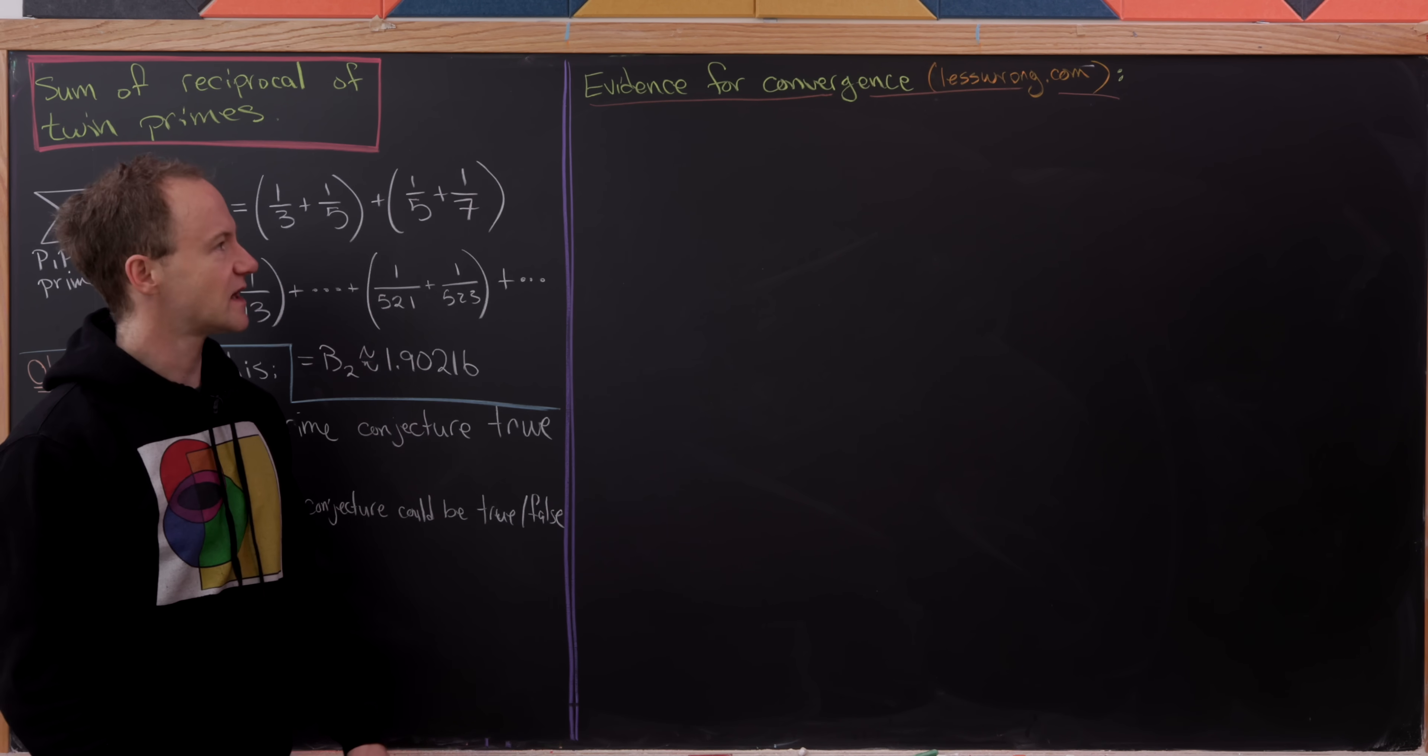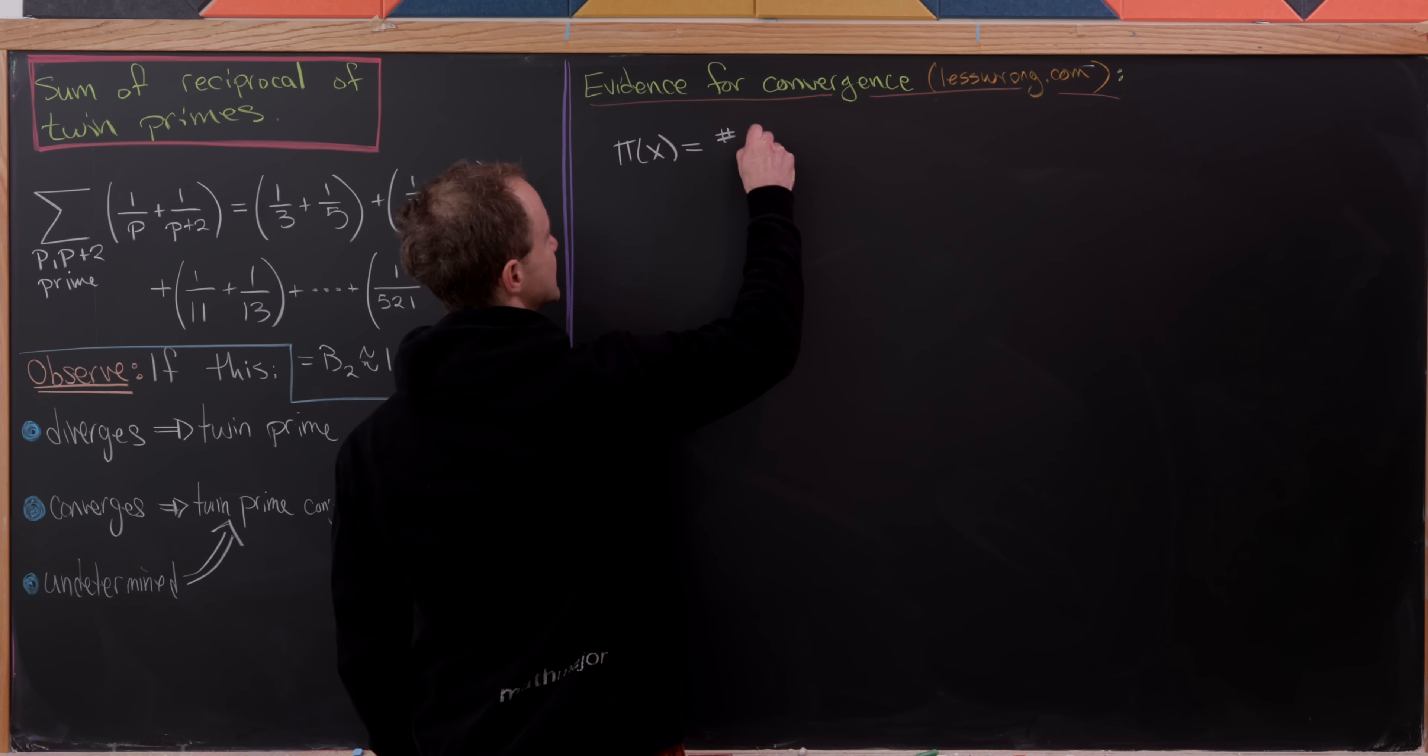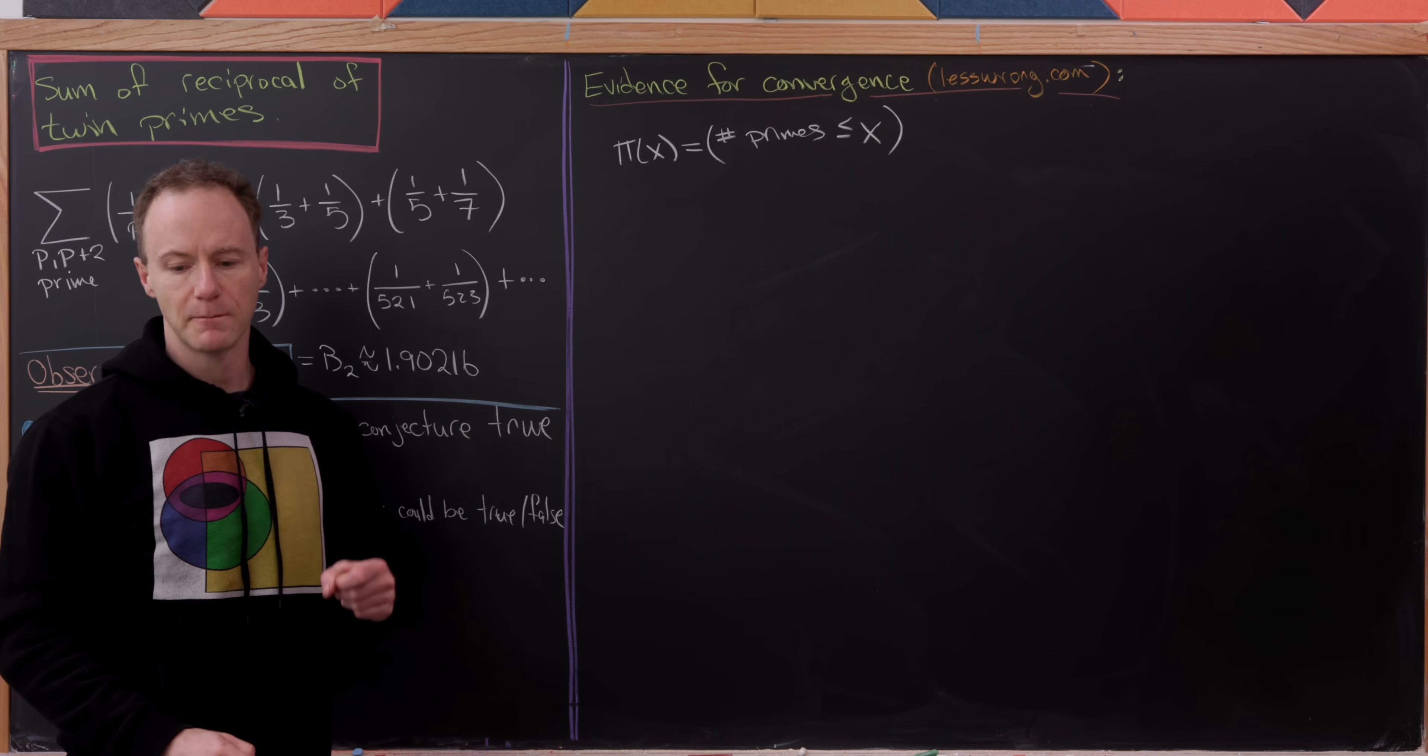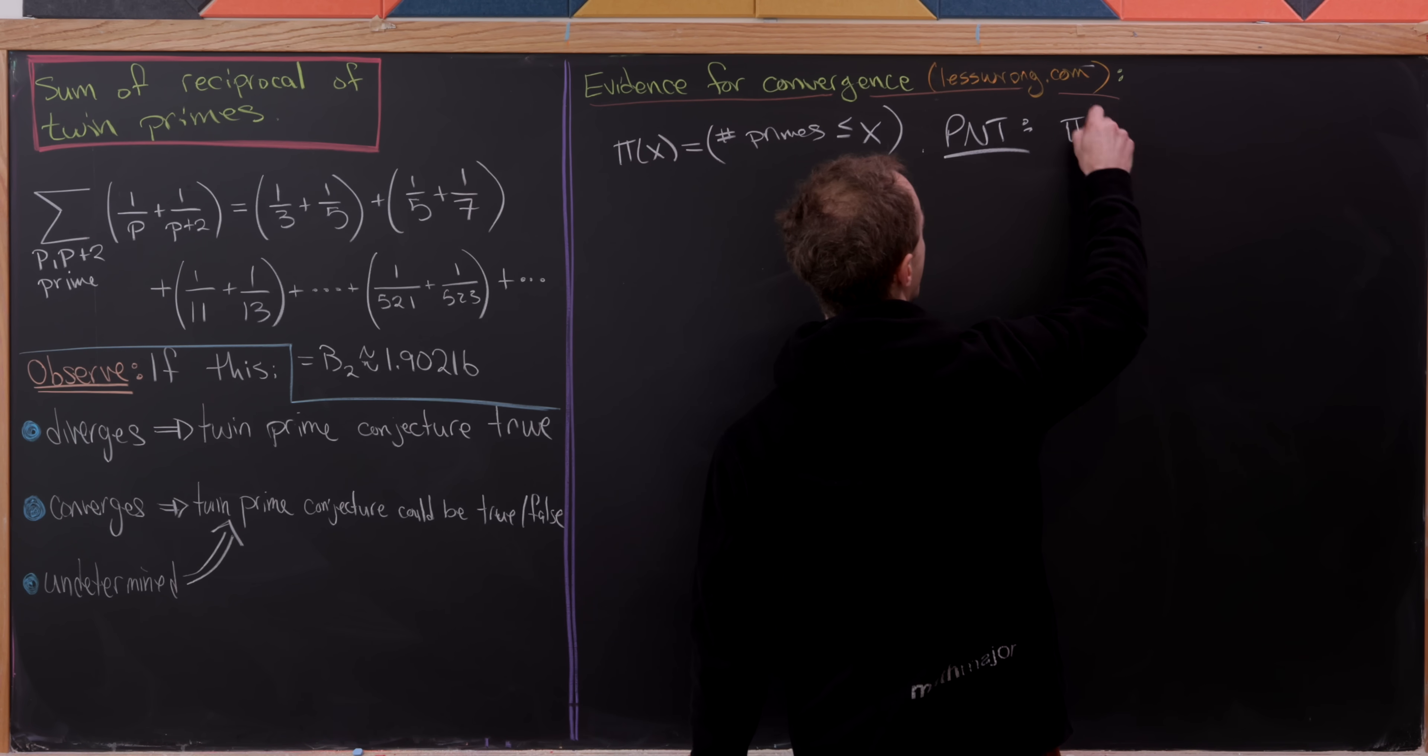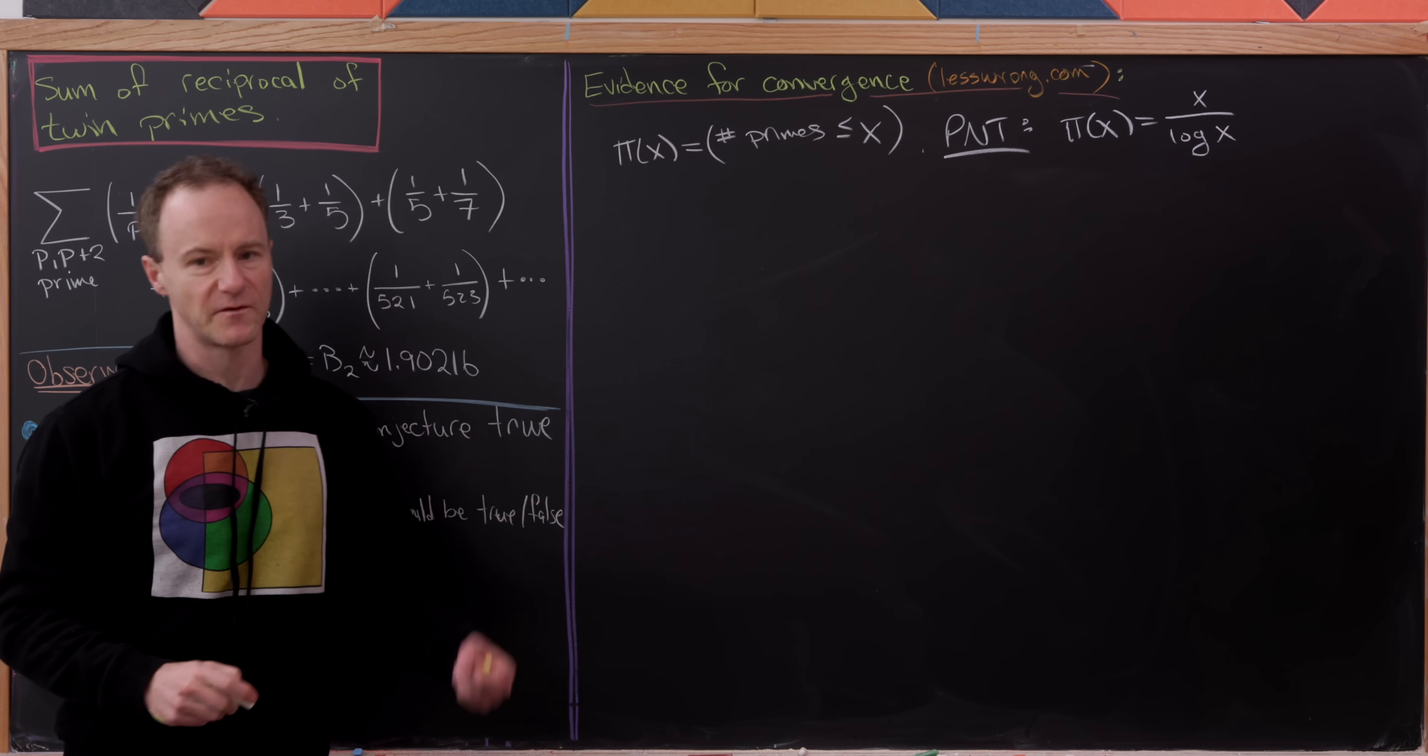Let's build some notation. Let's let π(x) be the prime counting function. So this is the number of primes that are less than or equal to x. And then by the prime number theorem we know that this asymptotically grows like x over the log of x. And so prime number theorem is a famous result.